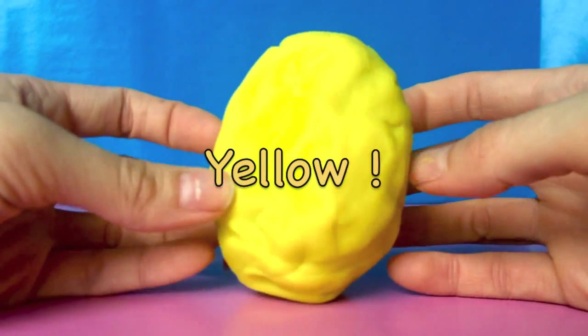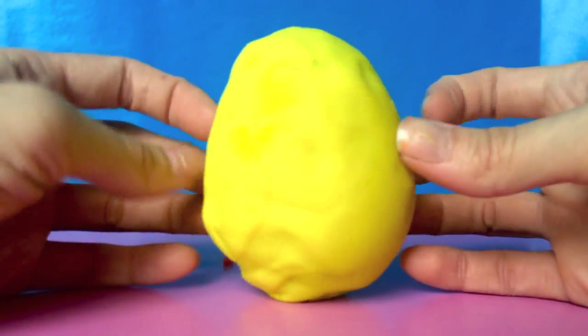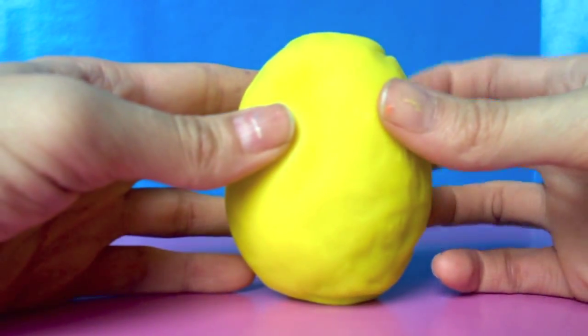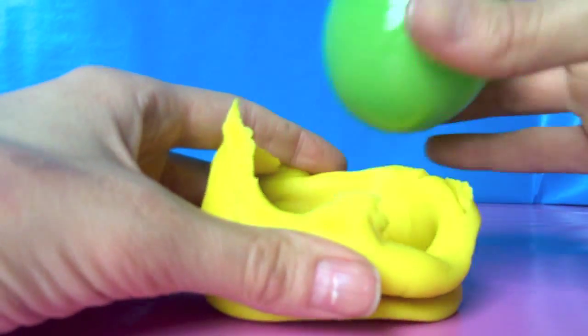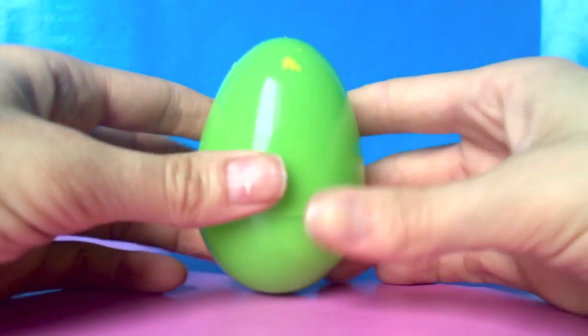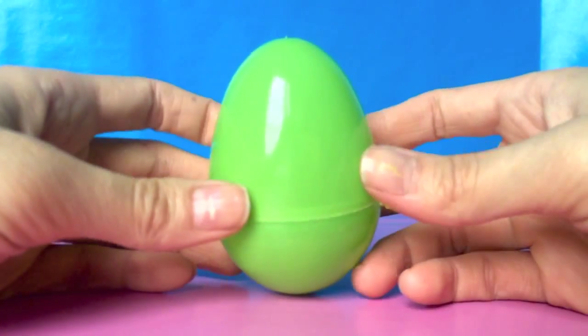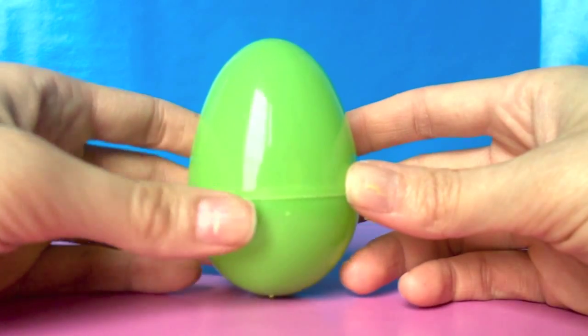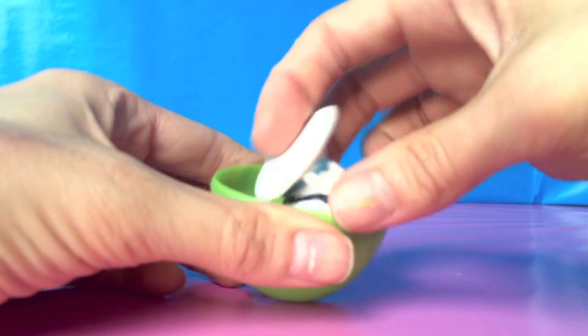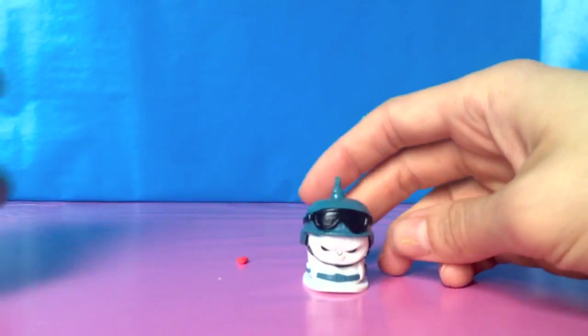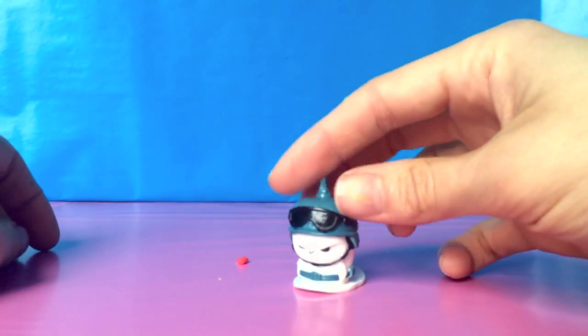Our last egg is yellow. Let's open it. Inside is a green egg. It's a little cute birdie.